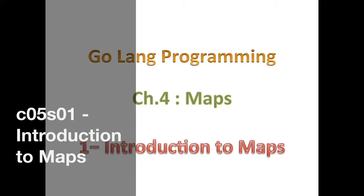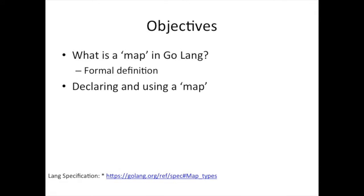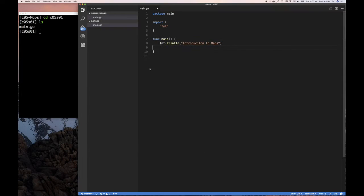Welcome back. We're in chapter 5 and we're going to be talking about maps, which is another built-in data type in Go. We're going to look at what a map is and then start talking about declaring and using maps. In chapter 4 we talked about slices, and before that in chapter 3 we talked about arrays — slices and arrays are pretty much the same thing, and we know a slice uses an array underneath.